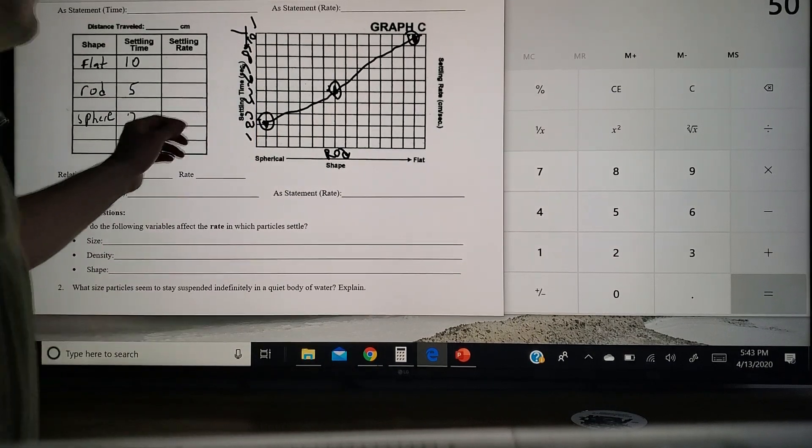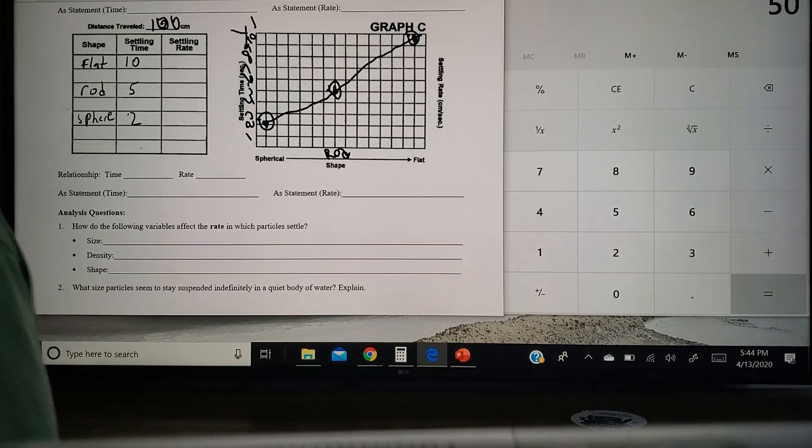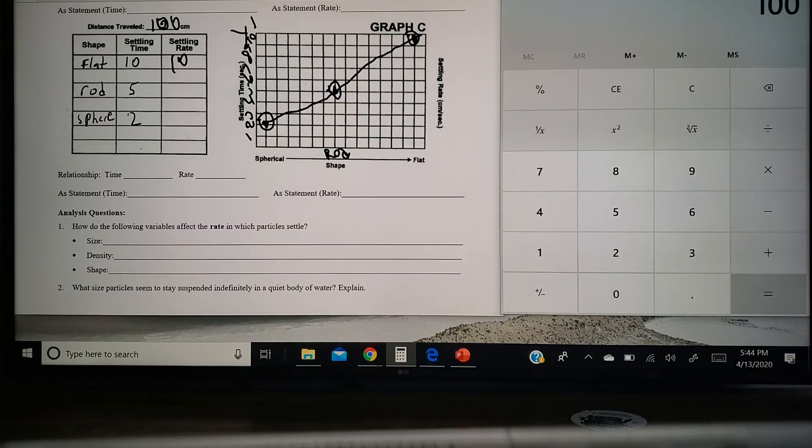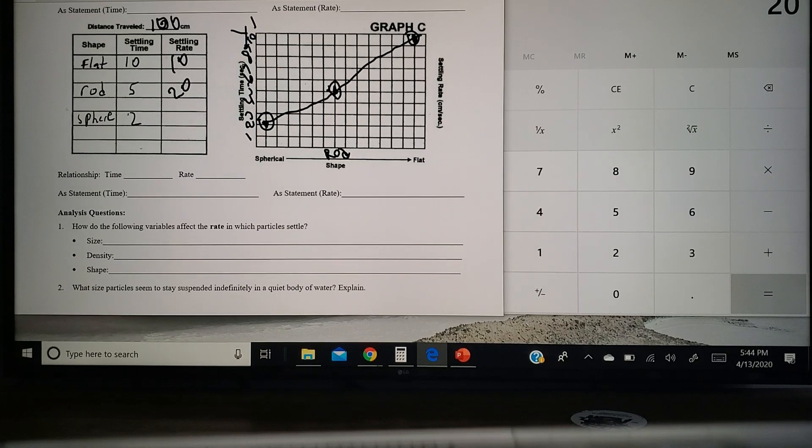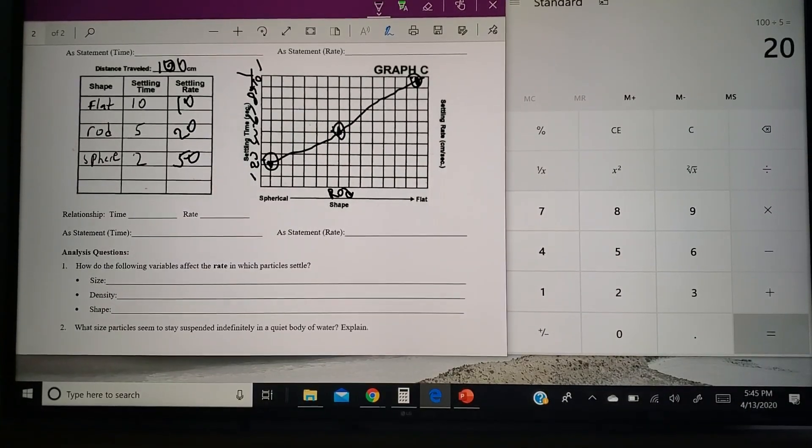That distance is still a hundred. Right? That column didn't change. And now for settling rate, you're going to plug them in again. So once again, you have a hundred divided by your 10. And of course, that's 10 here. 100 divided by five. Right. And of course, that's 20 here. And 100 divided by two gives you the 50 there. All right. All right. So now we're just going to put our Y2 data in there.